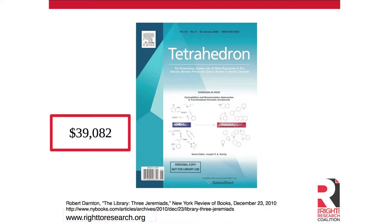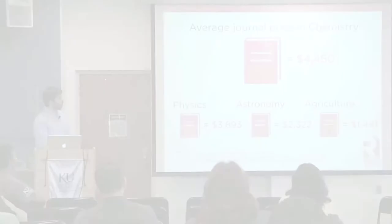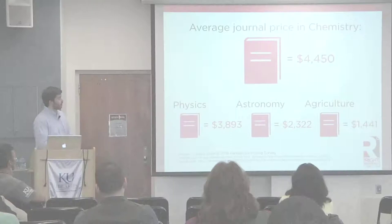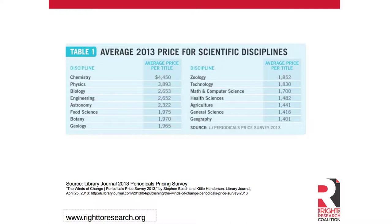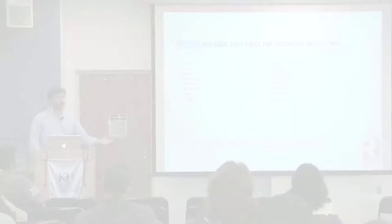This is obviously an extreme case, but there are lots of disciplines where the average journal price is actually over $1,000 per year. This is a selection of four, with chemistry being the most expensive at well over $4,000 on average for a journal indexed in the ISI Web of Science. There are actually about 16 entire academic disciplines where the average price for a title is over $1,000. And it's not just STEM fields — you can see others like agriculture, geography, and zoology.